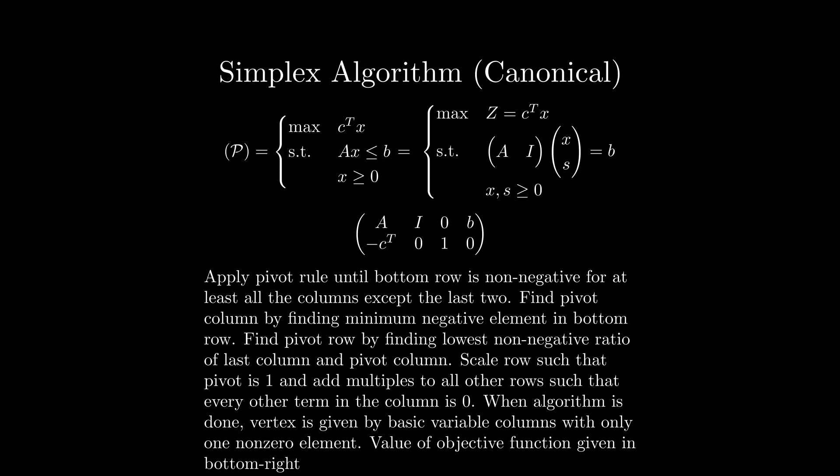We then apply the following pivot rule until the bottom row is entirely filled with non-negative elements. Find the element of the lowest value in the bottom row. Divide the last column by the column of this element, and find the row with the minimum non-negative ratio. Normalize the element at this row and column to be 1, and then add constant multiples of this row to all others to zero out all other elements in this column. Let's look at an example to see this algorithm in action, to better grasp how it actually works.